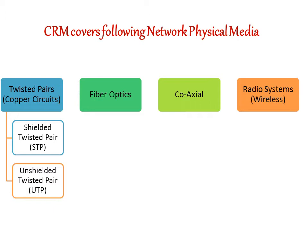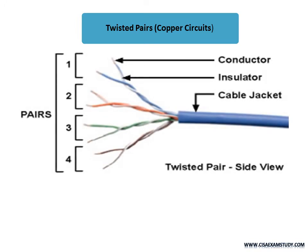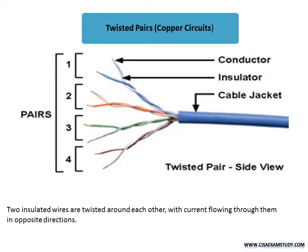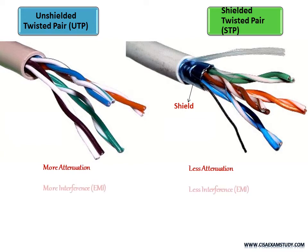In twisted pair we have two further bifurcations: shielded and unshielded. Twisted pairs are also known as copper circuits. Two insulated wires are twisted around each other with current flowing through them in opposite directions. Twisted pair can be bifurcated into unshielded twisted pair (UTP) and shielded twisted pair (STP). Because of the shield in STP, there is less attenuation, less interference, and less crosstalk.